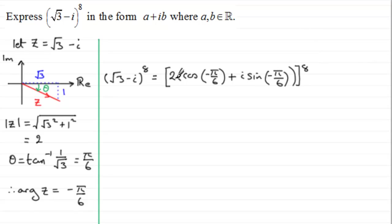So we can expand this, we can rewrite this as 2 to the power 8, and then the cos of minus π upon 6 plus i sine of minus π upon 6 all to the power 8. We'll do that here. So we've got 2 to the power 8, and then this is multiplied by the cosine of minus π upon 6 plus i sine of minus π upon 6, and all this is to the power 8.